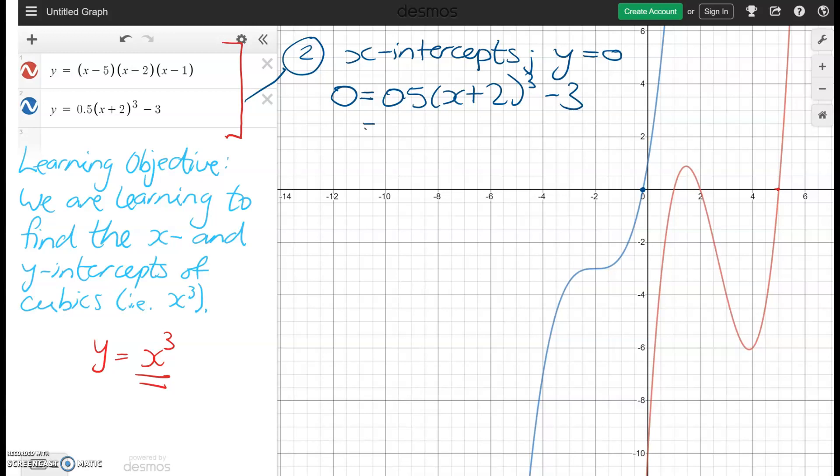We then use our algebra to solve this. So we're going to get rid of that plus three. Plus three on the other side. So three is equal to 0.5 x plus two cubed. We're then going to keep following our reverse BEDMAS. We're going to get rid of that times 0.5 by dividing by 0.5. Three divided by 0.5 is equal to six. So six is equal to x plus two cubed.